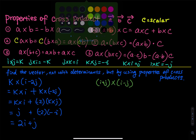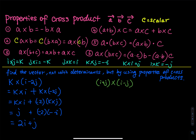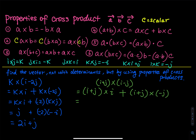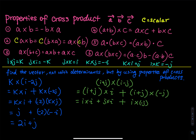The green one: (i plus j) cross (i minus j). The first thing I would do is distribution. That equals (i plus j) cross i, plus (i plus j) cross negative j. I always do a plus because the negative sticks with the j. Expanding: i cross i, plus j cross i, plus i cross negative j, plus j cross negative j.